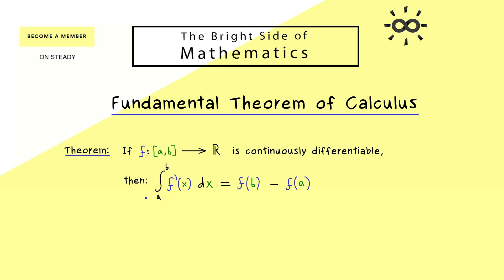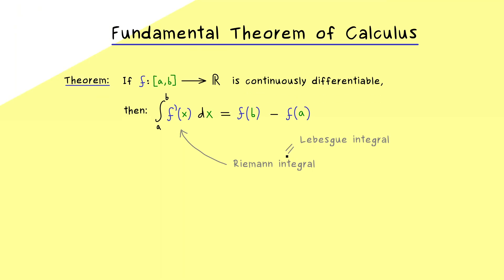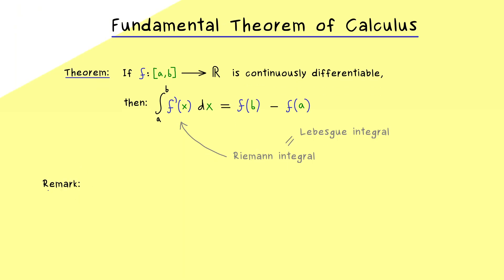This connection between integration and differentiation makes it the fundamental theorem. The common approach for calculus or real analysis is to use the Riemann integral first. However, one can generalize the whole process of integration and get the so-called Lebesgue integral. The Lebesgue integral is much more suited for a general theory of integrable functions, and it is more general than the Riemann integral — whenever the Riemann integral exists, it equals the corresponding Lebesgue integral. In other words, the fundamental theorem of calculus is correct no matter which integral version you use. The Lebesgue integral is especially helpful if we want to weaken the assumptions of the theorem.